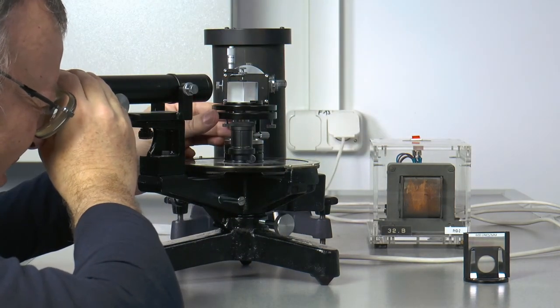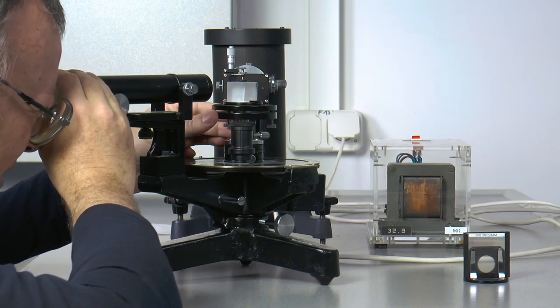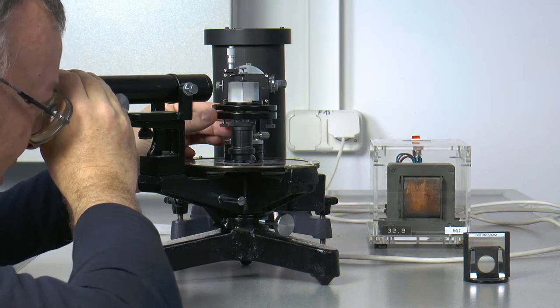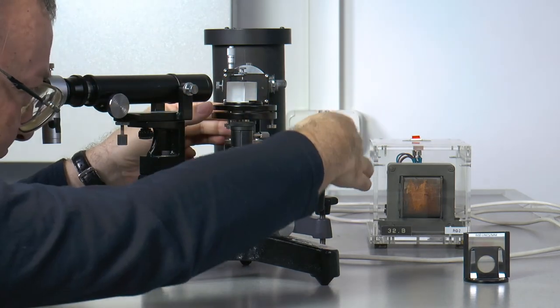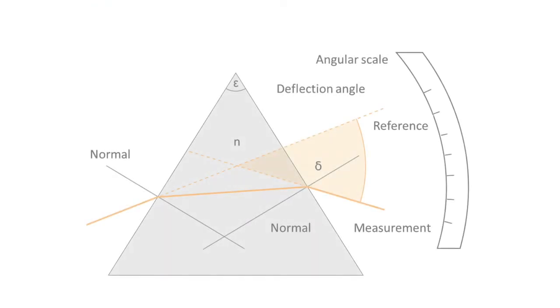Then place the glass prism on the prism table and adjust the table with the screws if needed. Then rotate it so that the yellow spectral lines experience minimum deflection. This minimum deflection angle occurs when the beam inside the prism is parallel to the base side of the prism.